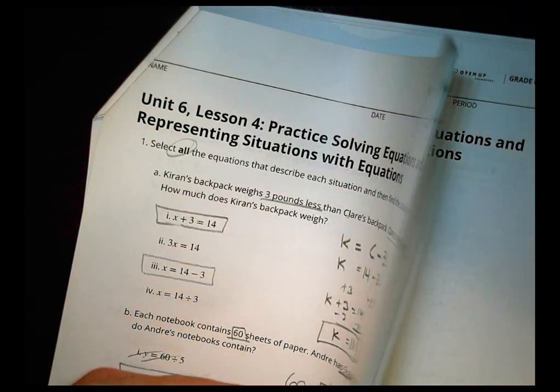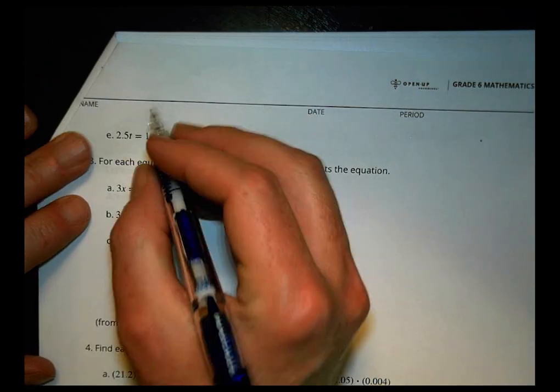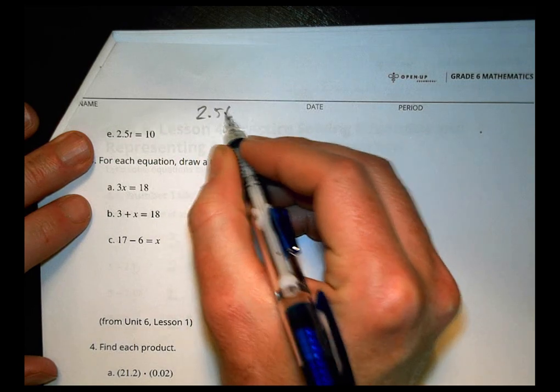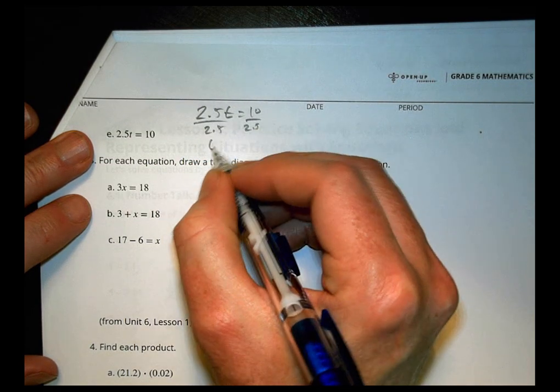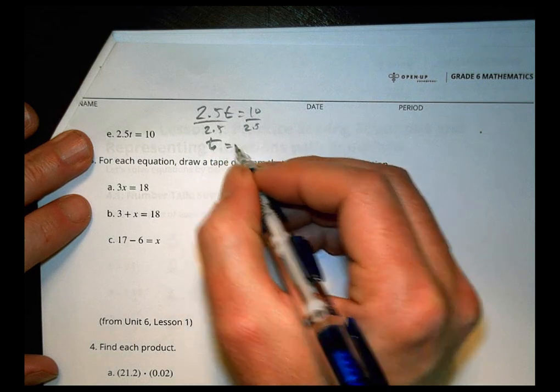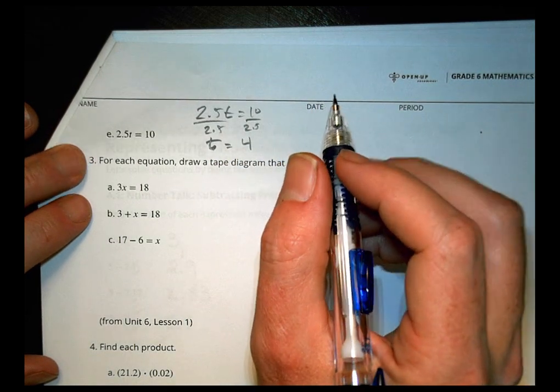Alright. And one more on the back page for me. Maybe not your back page. As the books get adjusted throughout the years, it might be a little different, but last one. To solve this, we have 2.5 T equals 10. We'll divide both sides by 2.5. T then equals 4. Alright. Great.